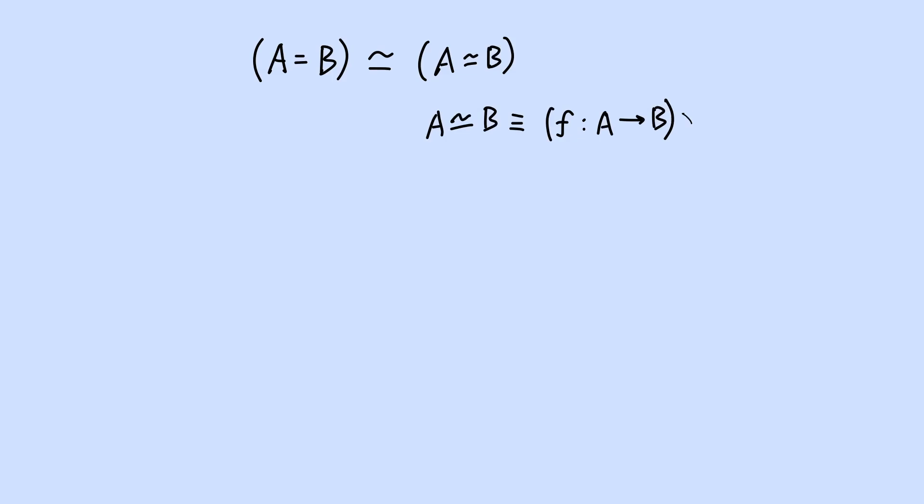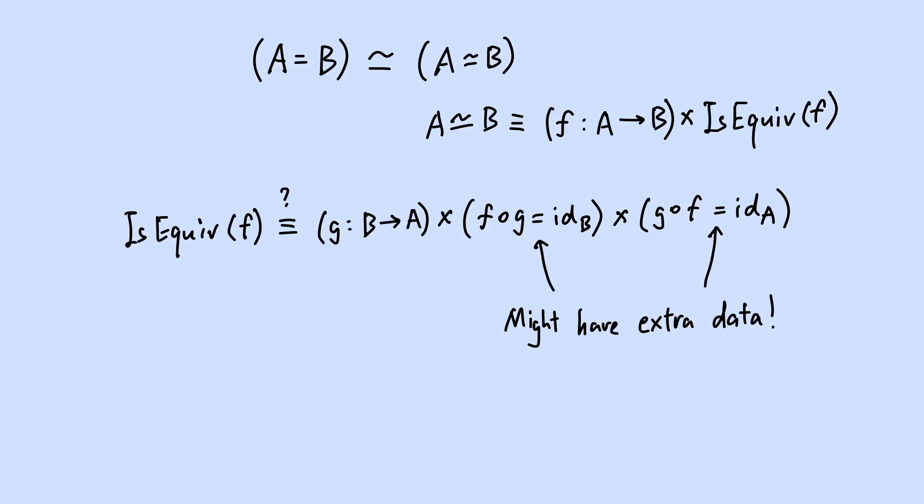Consider the equivalence type. A proof of A being equivalent to B should consist of a function, f from A to B, and a proof that f is equivalent. The obvious definition that f is equivalent is when there is an inverse function, but this is actually not a good one. This is because now it's possible for the identity type between functions to have more than one element as well, and isEquiv(f) as a result can have more than one element. This is undesirable because we want two equivalences from A to B to be the same as long as the underlying functions are equal. Otherwise, there could be more equivalences from A to B than there are functions.